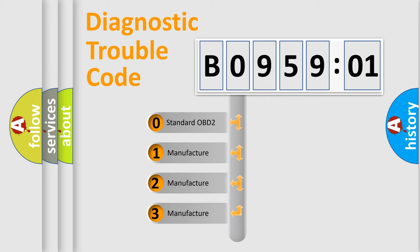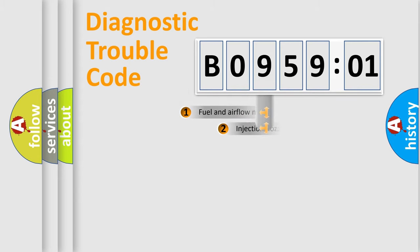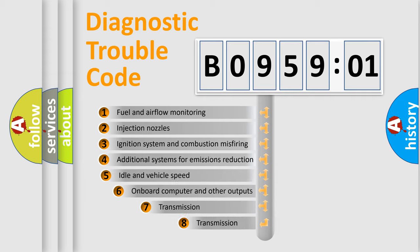If the second character is expressed as zero, it is a standardized error. In the case of numbers 1, 2, or 3, it is a manufacturer-specific expression of the car-specific error.